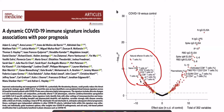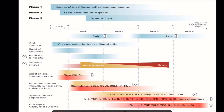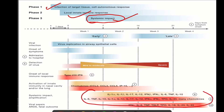COVID-19 has a typical signature which is associated with reduction in T-cell levels and elevation in antibodies and cytokines. The phases of infection include initial infection of local tissues with initiation of a local innate immune response, finally leading to a systemic impact. This systemic impact is associated with respiratory symptoms — the cytokine storm, the production of ARDS.